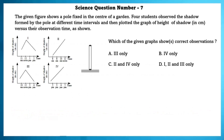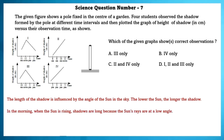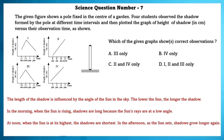Science question 7. The given figure shows a pole fixed in the center of a garden. Four students observed the shadow formed by the pole at different time intervals and plotted a graph of height of shadow versus observation time. The length of the shadow is influenced by the angle of the sun. In the morning, shadows are long because the sun's rays are at a low angle. At noon, when the sun is at its highest, shadows are shortest. In the afternoon, as the sun sets, shadows grow longer again. According to this observation, figure 4 is the correct one.